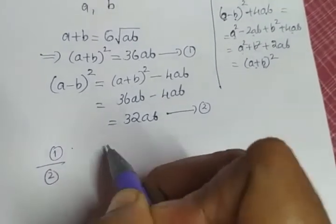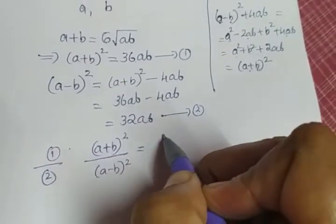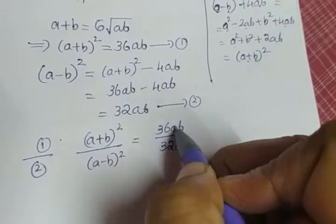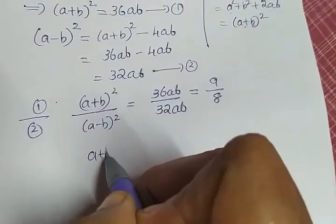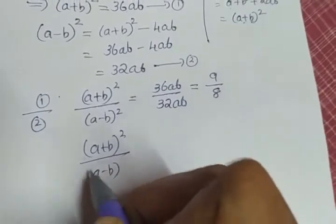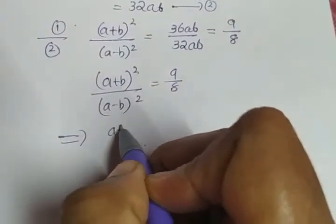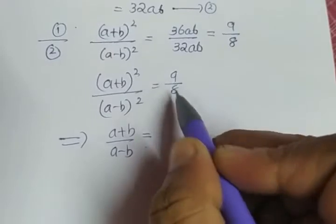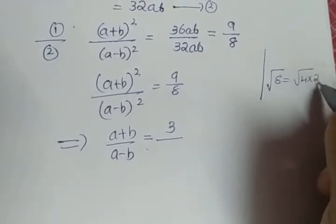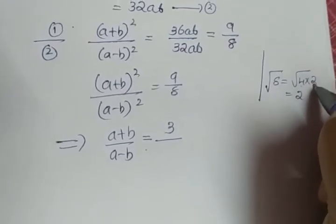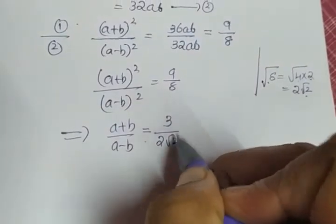We are going to divide equation 1 by equation 2. Left side: A plus B the whole square divided by A minus B the whole square, equals right side: 36AB divided by 32AB. AB gets cancelled, 36 and 32 cancel giving 9 by 8. So A plus B the whole square divided by A minus B the whole square equals 9 by 8. Taking the square root on both sides, A plus B by A minus B equals root of 9, which is 3, divided by root of 8. Root of 8 is 4 into 2, so square root of 4 is 2 and root 2 remains, giving 2 root 2.